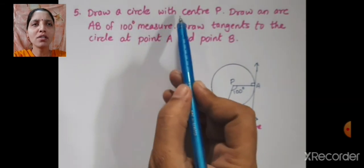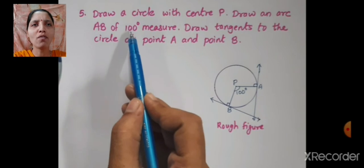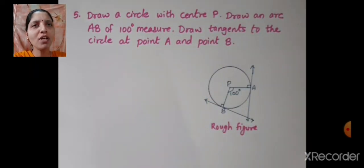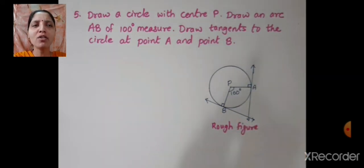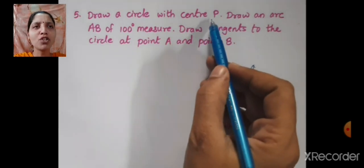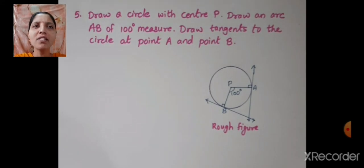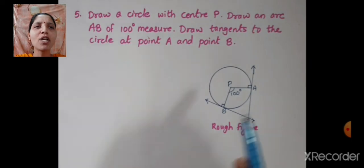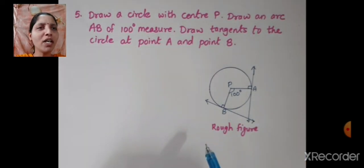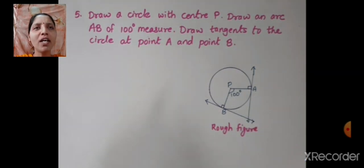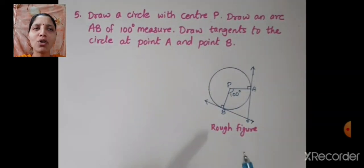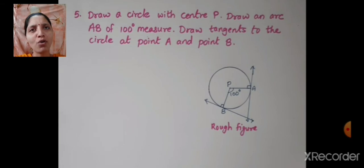Fifth sum: draw a circle with center P. Draw an arc AB of 100 degrees major. Draw tangents to the circle at point A and point B. This is simple when only the measure of one arc is given. First you have to draw a circle. Your radius is not mentioned, so you can draw a circle of any radius. The center is given as point P. Then you have to draw an arc of 100 degrees major — that means take point A on the circle anywhere, and with the help of a protractor draw a 100 degree arc. The end points of this arc are A and B, and through point A and B you have to draw the tangents. First draw the rough figure, and then with the help of this figure draw the fair figure.